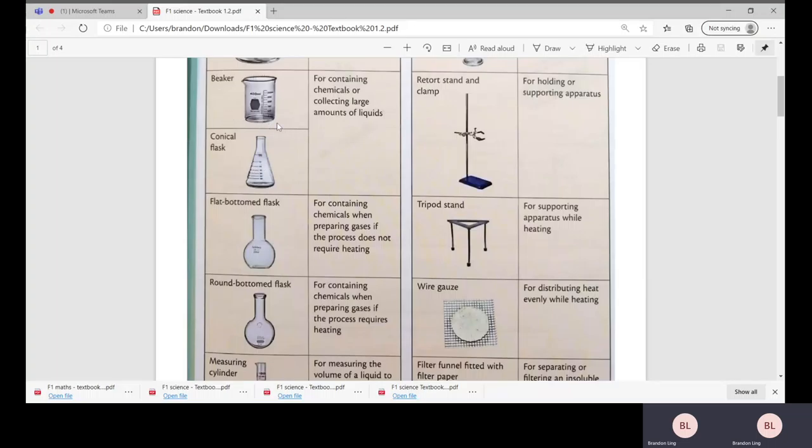Next we have the beaker or conical flask. They have graduations or different measurements on the glass itself. The functions are to contain chemicals or collect large amounts of liquids. On your right, retort stand and clamp.